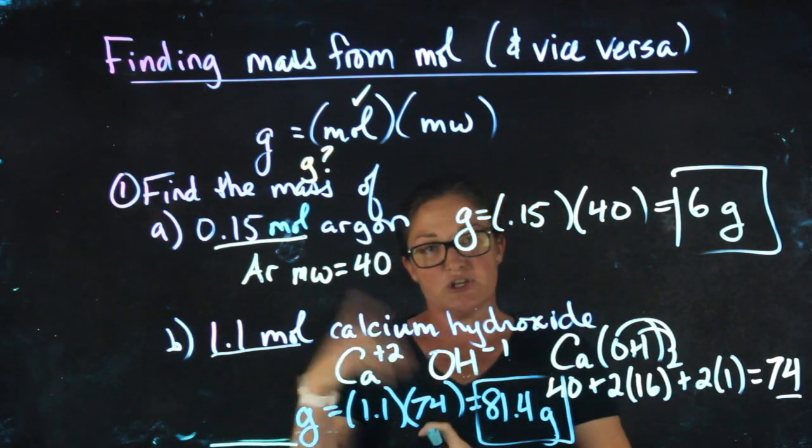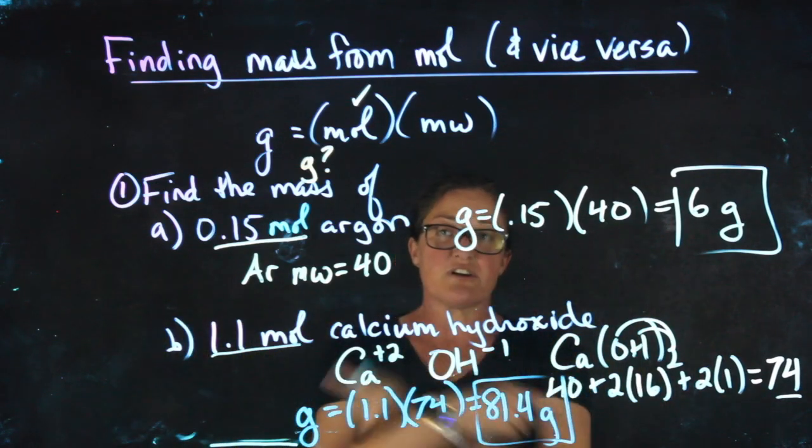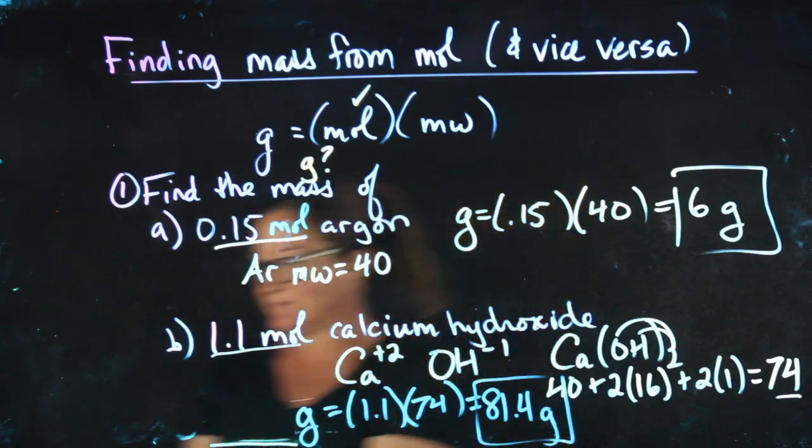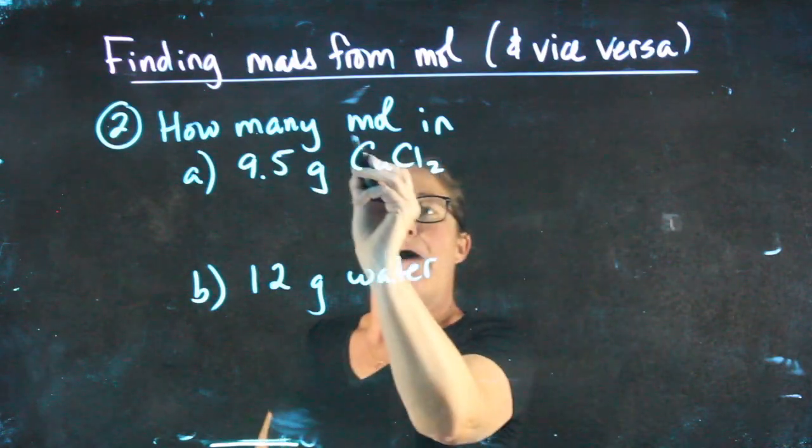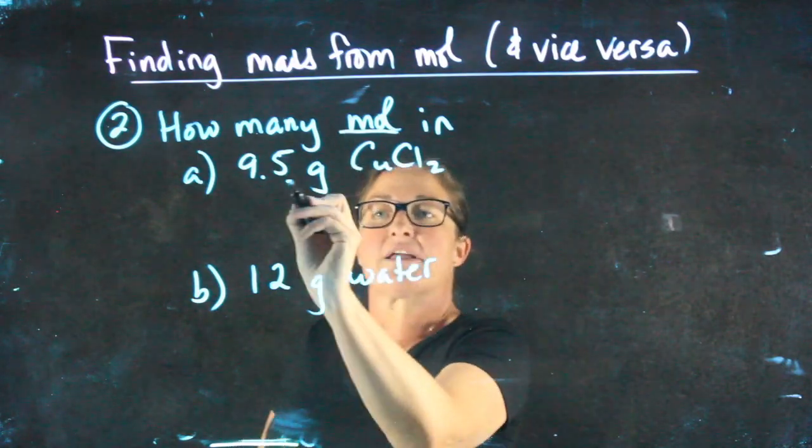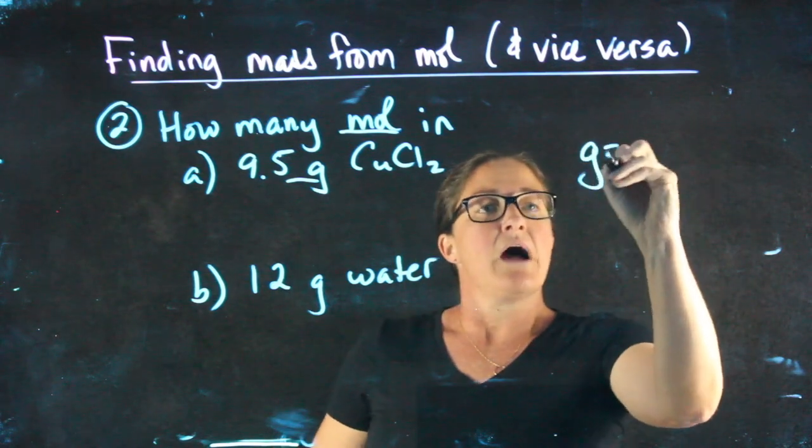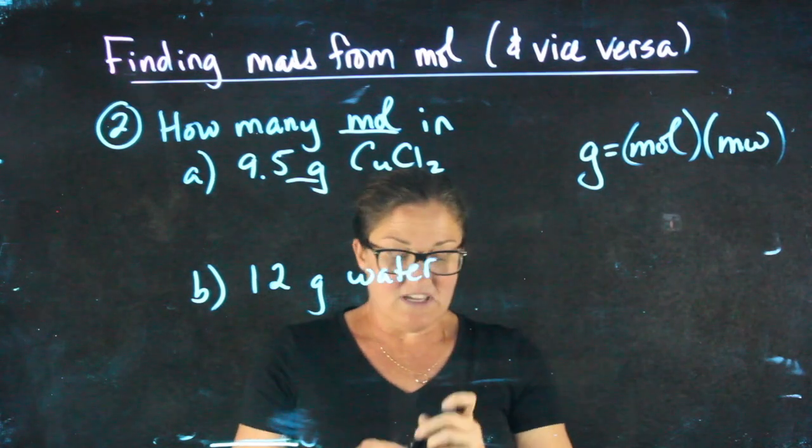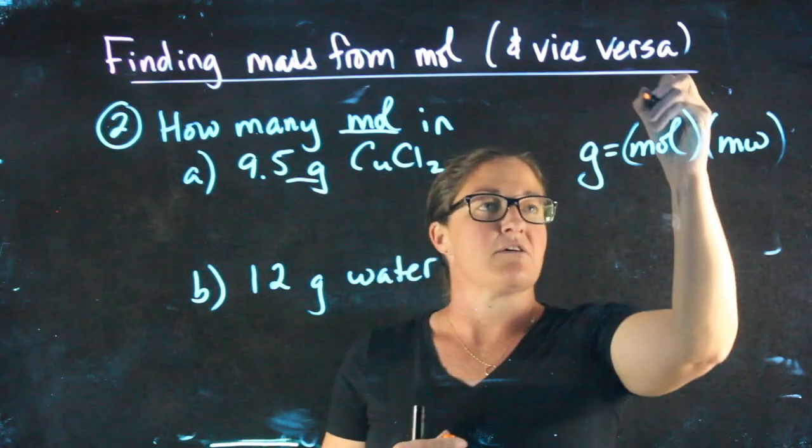Our next example, number 2, is going to look at the reverse problem where you're given the grams and you solve for the moles. Now I'm going to be looking for moles when I already know the grams. I'm going to be using the same formula, only difference is now my unknown is going to be here.